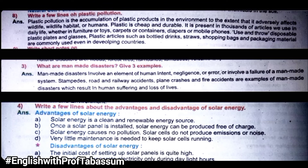Write a few lines on plastic pollution. You can write a lot about plastic pollution — where plastic is used: in furniture, carpets, containers, diapers, mobile phones, glasses, plastic articles, strings, drinks, straws, shopping bags, and packaging materials. All those things you can include in your answer.